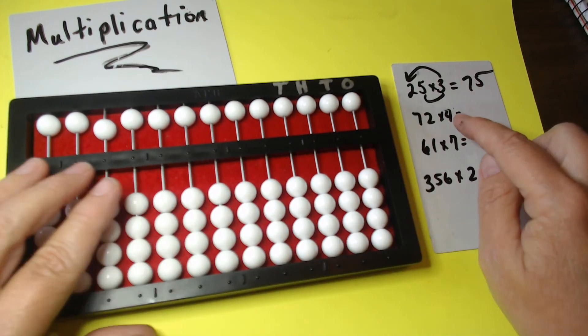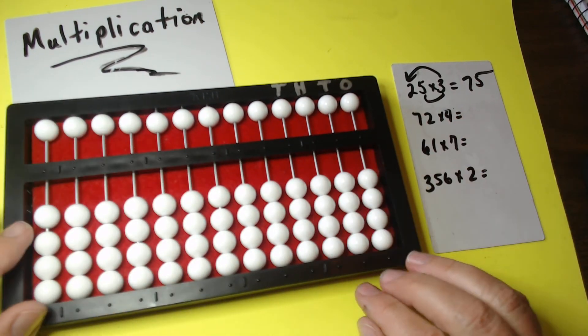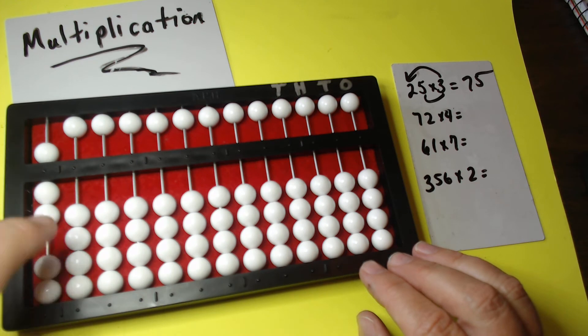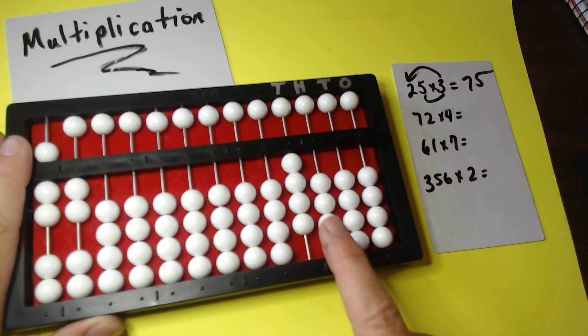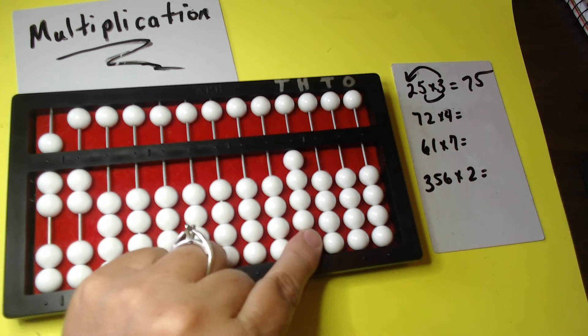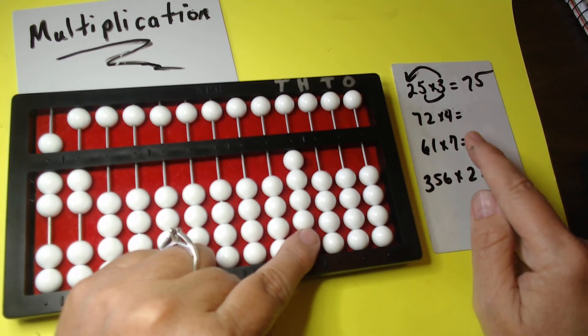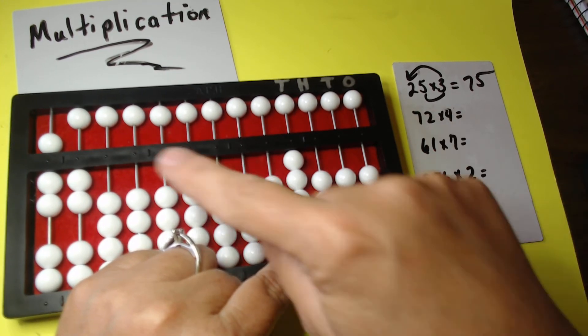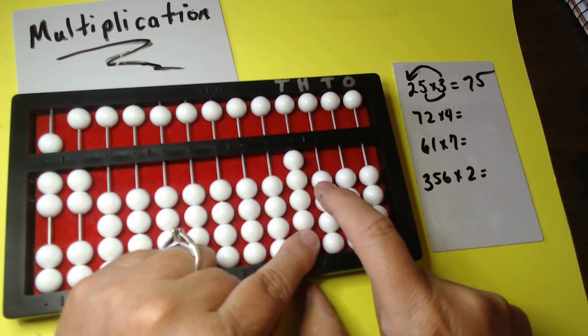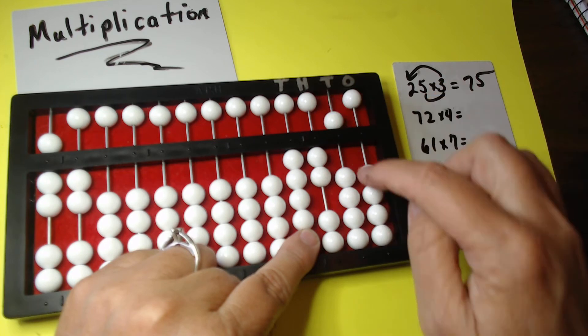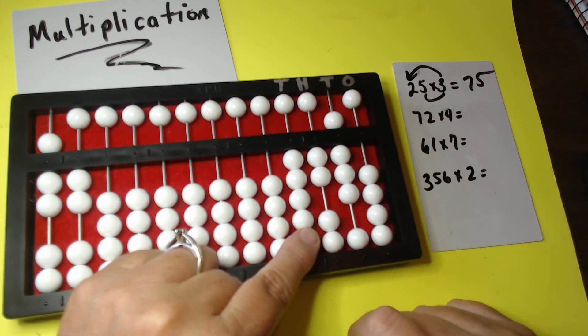All right, here we go. We're going to do 72 times 4. We're going to go to the far left, 72. 72 times 4. We're going to set our 4 here. I'm going to put my index to hold my place. We're going to do the 4, this 4 times the 7. That's 28. 28 is already two digits, so we're good. 10, 20, 5, 6, 7, 8. We're through with that.